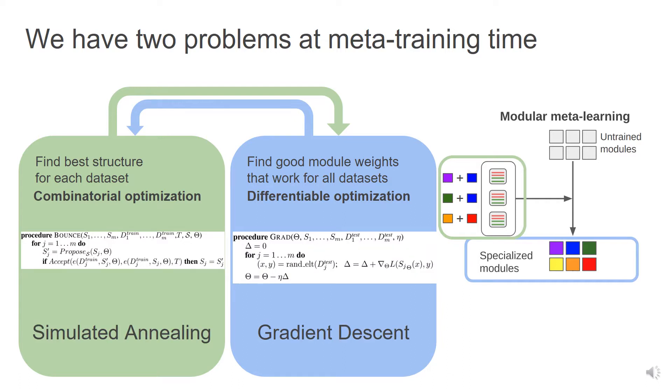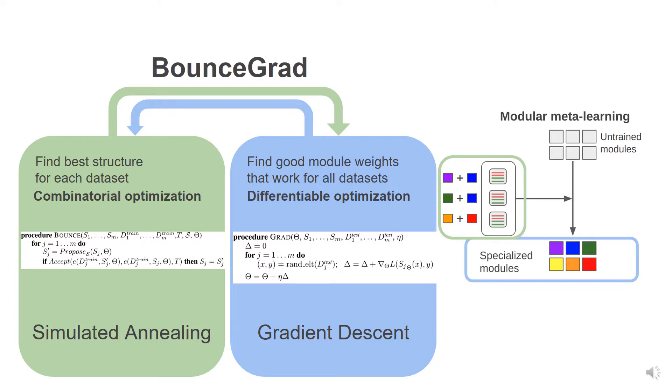We propose to use simulated annealing to optimize the structures and gradient descent to optimize module weights. Our algorithm, BounceGrad, alternates between a simulated annealing step, Bounce, and a gradient descent step, Grad.